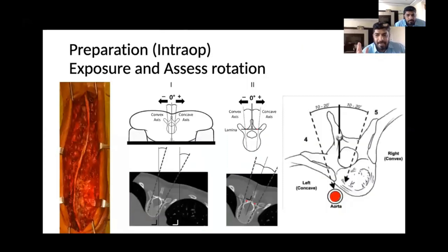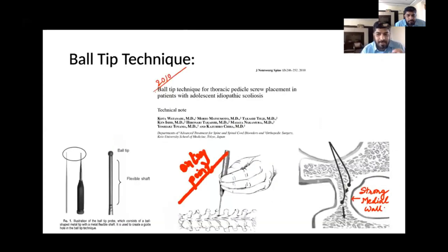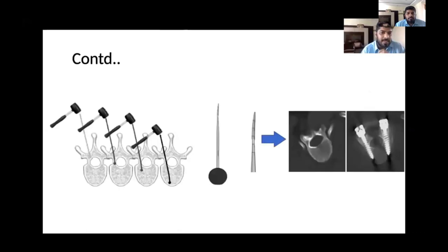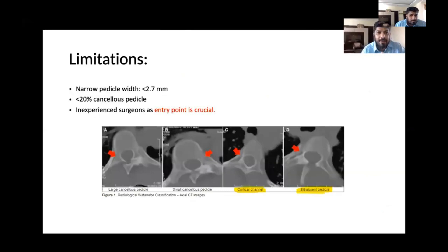Always keep in mind that if you get out of the vertebral body, there are chances of hitting the greater vessels. The ball tip technique is very, very useful and keeps you safe — you always feel with the ball tip and the flexible shaft also helps. If you feel a give-away into soft tissue, you have to go back and check. X-rays will be of less use because the chances of getting a wrong or difficult image can be very high.